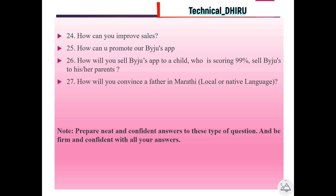The twenty-sixth question is: how will you sell the BYJU'S app to a child who is scoring 99% — sell BYJU'S to his or her parents? Some of these types of questions are generally asked just to know how quickly you think, and they need to be addressed on the spot. The twenty-seventh question is: how will you convince a father in Marathi or your local/native language? The interviewer is basically checking your command over sales in your native language, so be firm while answering. These questions decide your overall on-the-spot thinking ability. The interviewer can also ask questions depending upon circumstances, so give a thought before answering — don't just rush. I hope this video was helpful for you to prepare for the interview. If you are interested in me answering these questions in my next video, just leave a comment so I can share detailed answers.